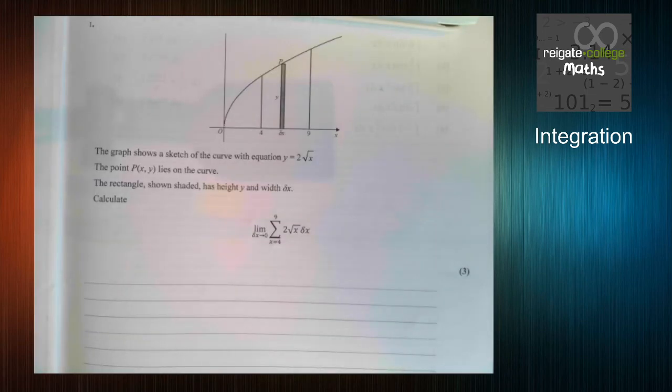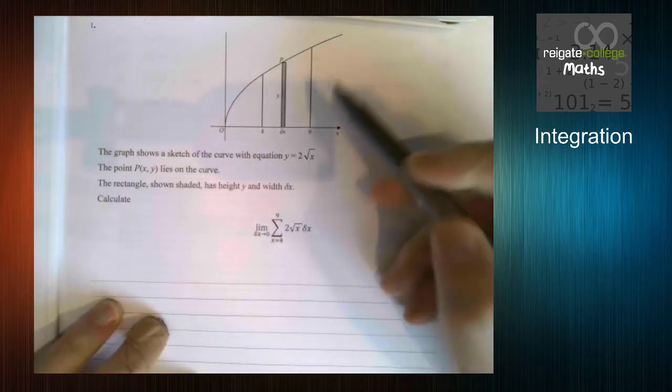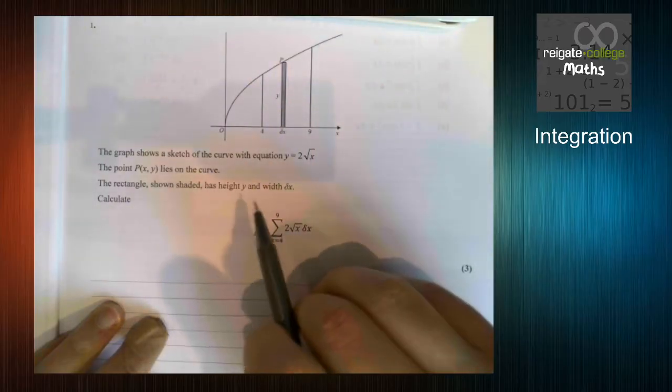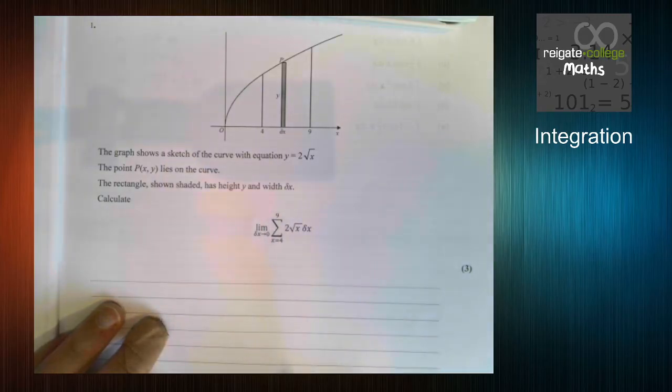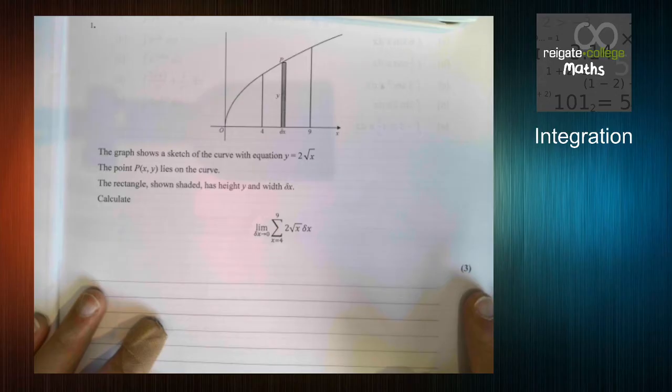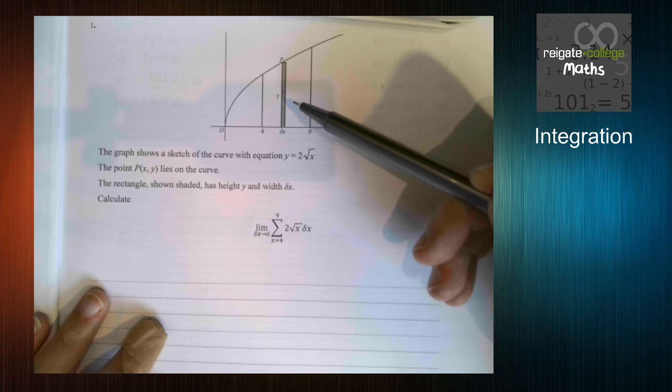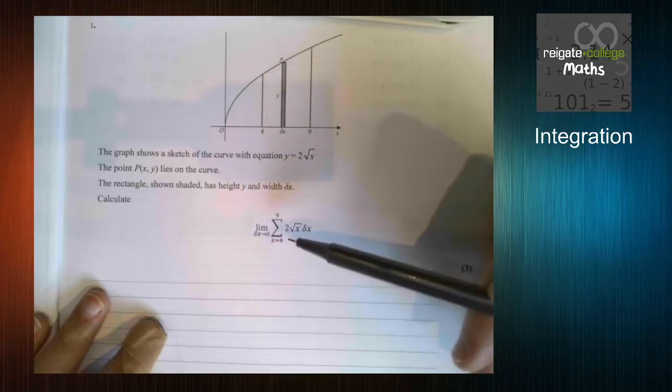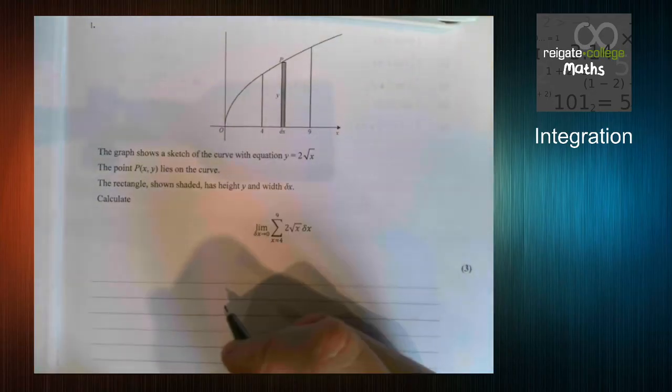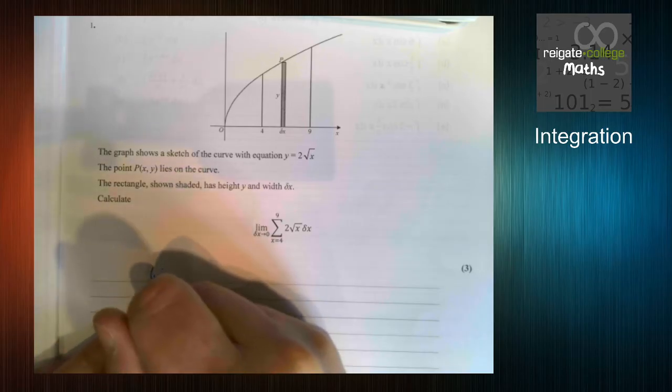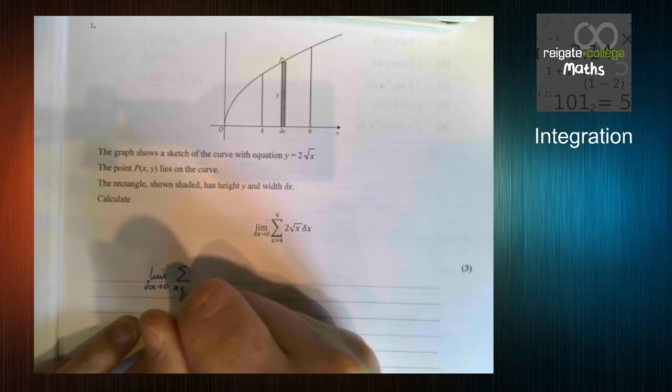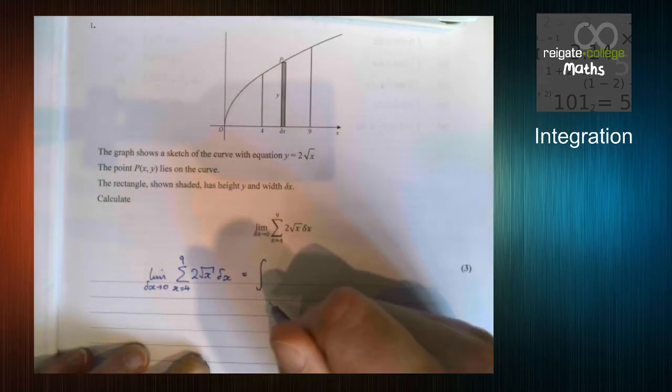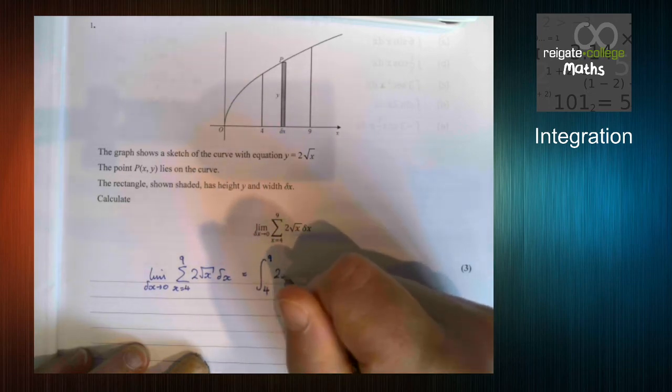So we can see we've got this question here. So we've got the graph showing a sketch of this curve with equation y equals 2 root x. The point p xy lies on the curve. The rectangle shown shaded has height y and width delta x. Calculate this. So this was from one of the exams. And if you didn't recognize that this is an area, and I'm doing lots of areas added together to make this big area, well this must be integration. It was a very hard question to do, but that's the point of it. You needed to recognize that the limit of delta x tends to 0 of the sum between x is 4 and 9 of 2 root x delta x is the same as the integral between 4 and 9 of 2 root x dx.